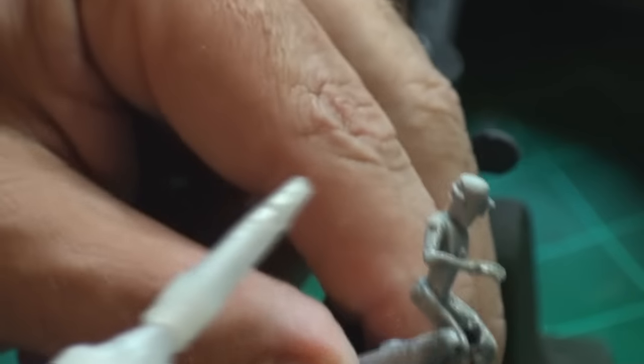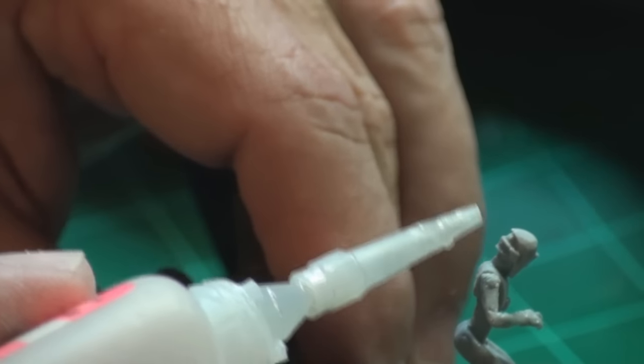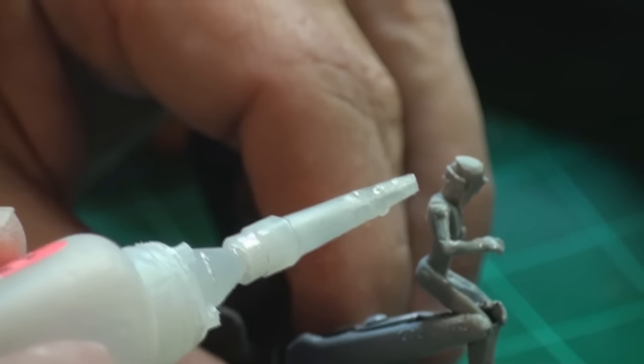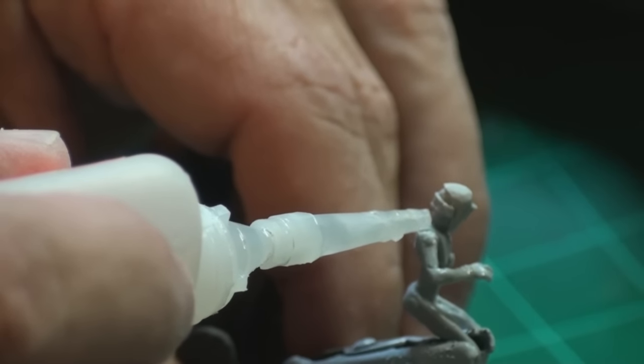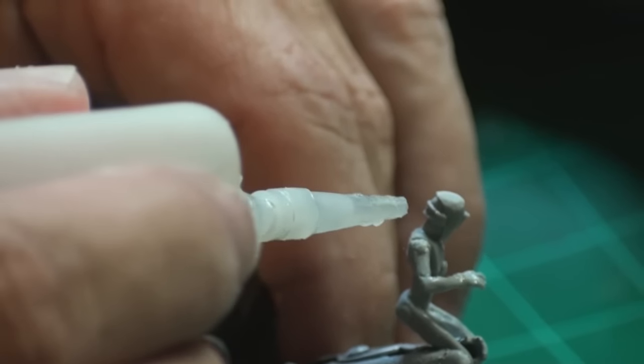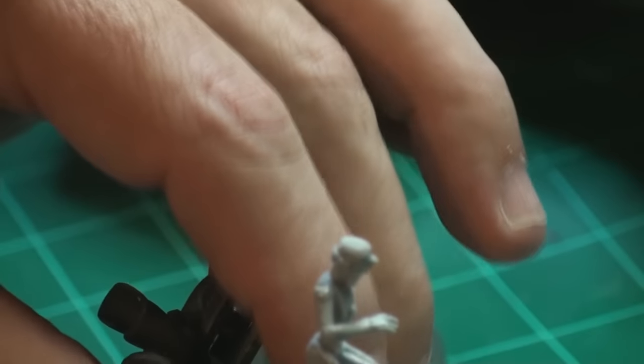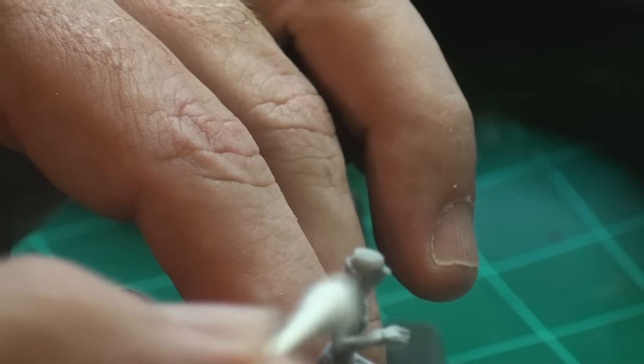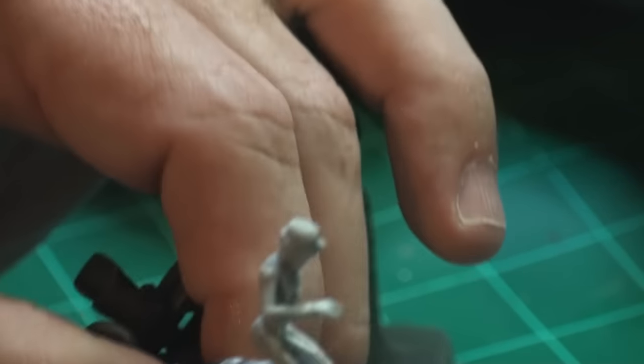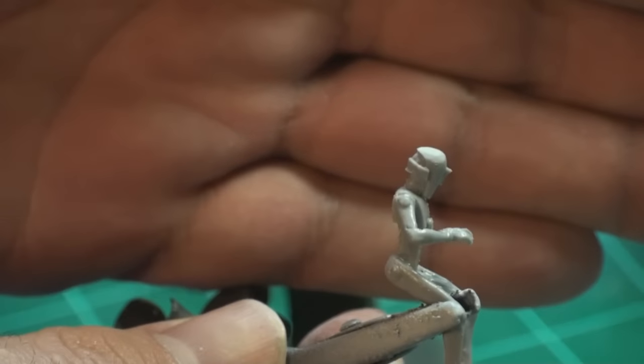Now let's say it's barely stuck on there right. So what you do is you come back with some thin zap-a-gap and you put it right on the top of the crack here and then you give it one little drop. Barely put a drop on there. If you get any excess on you can come back with a q-tip and wipe it up, but it's going to dry. Remember we've got the zip kicker on there so it's going to dry pretty quick. There you go.